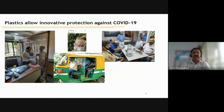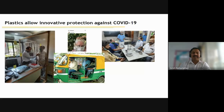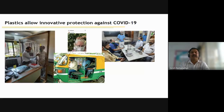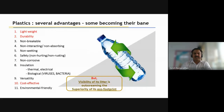Some plastics have been used very innovatively. One important measure to fight COVID is social distancing — you can see polycarbonate being used as a barrier between people, even in auto rickshaws and when visiting a physician. Plastics as a material have several advantages: it is lightweight, durable, non-breakable, versatile, cost effective, and also environmentally friendly. However, the visibility of litter is out-screaming the superiority of its eco-footprint — a lot of litter is causing a bad name for plastics.